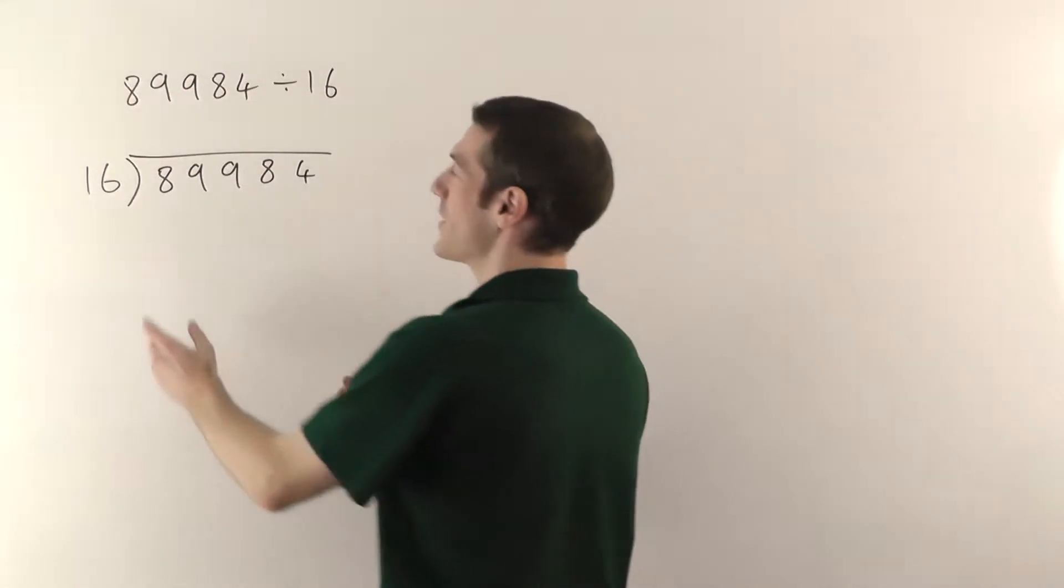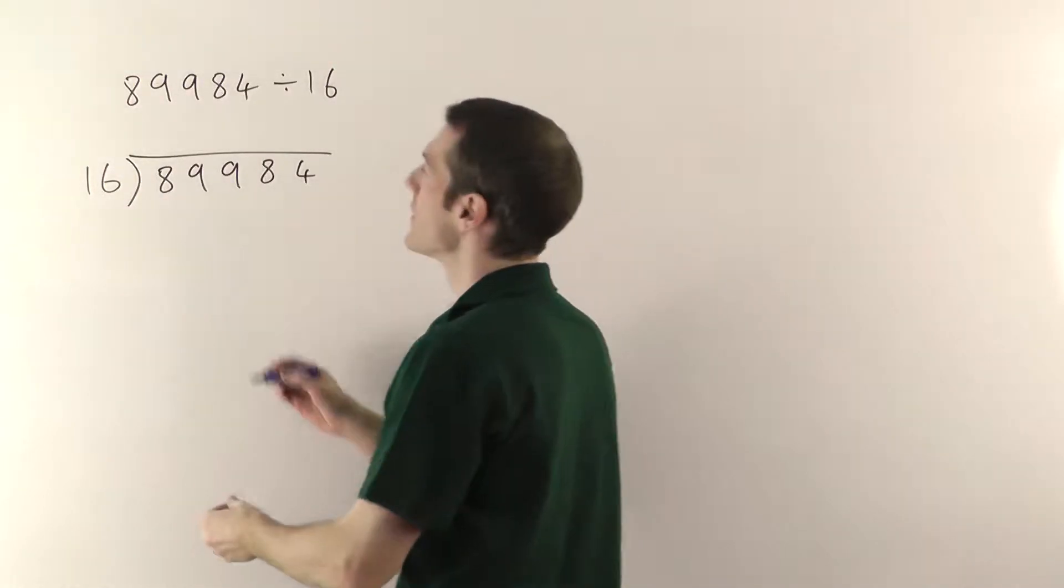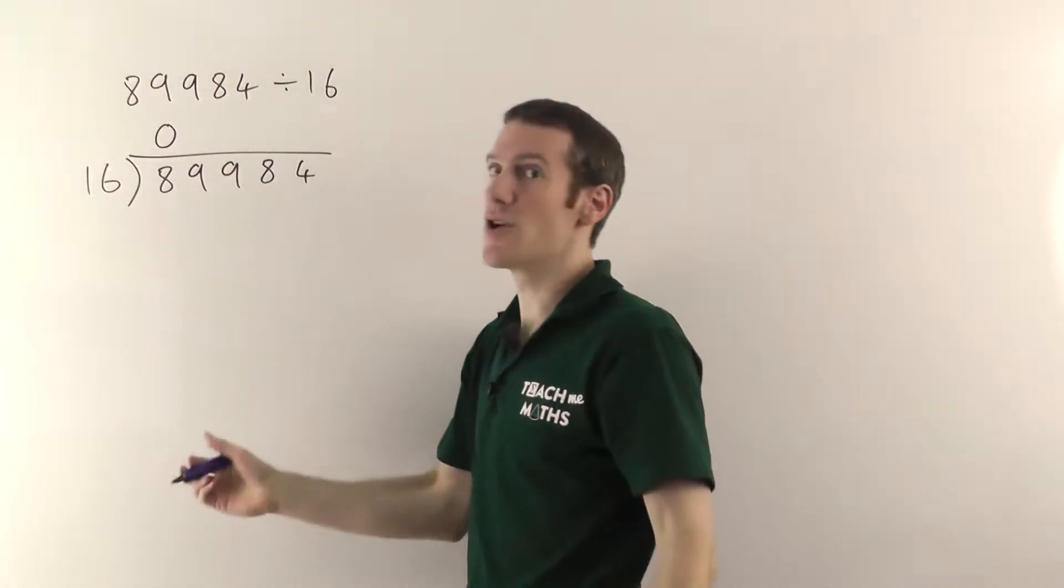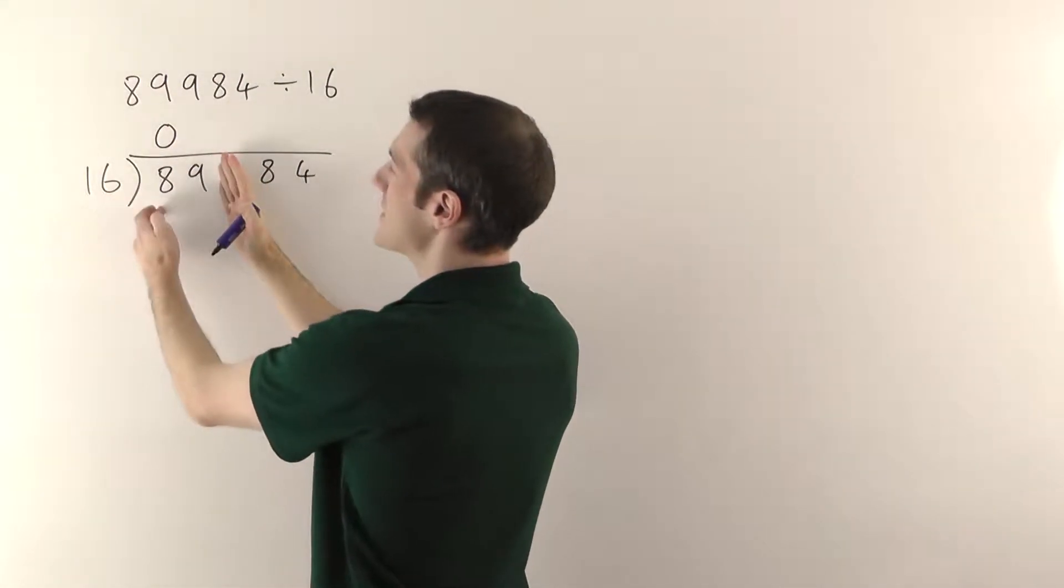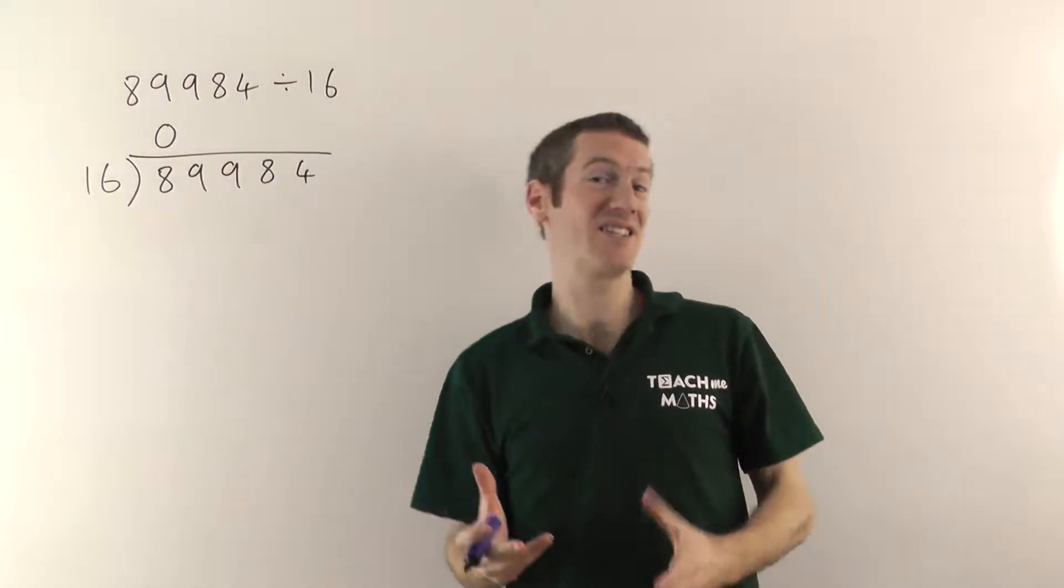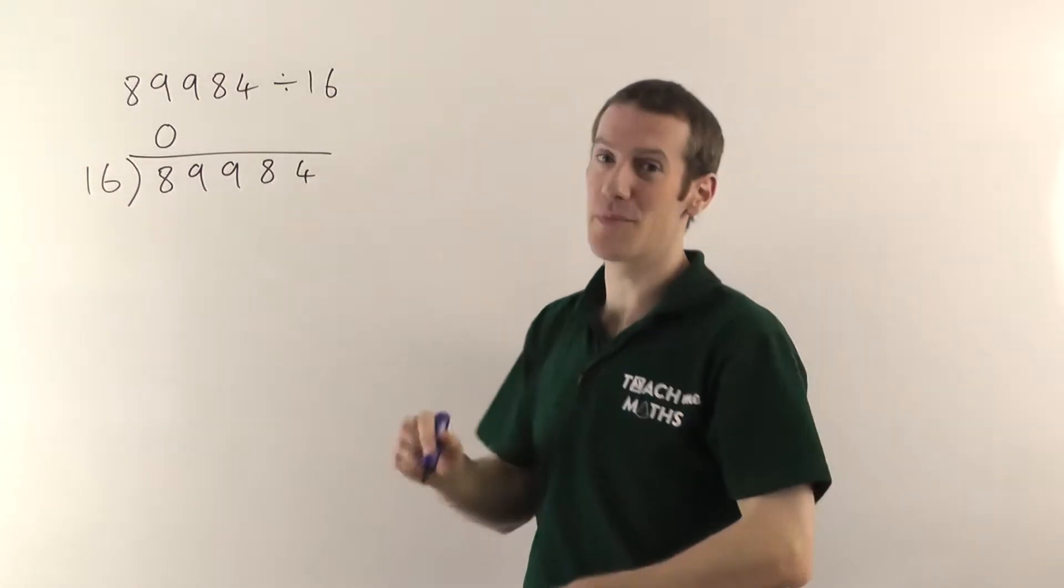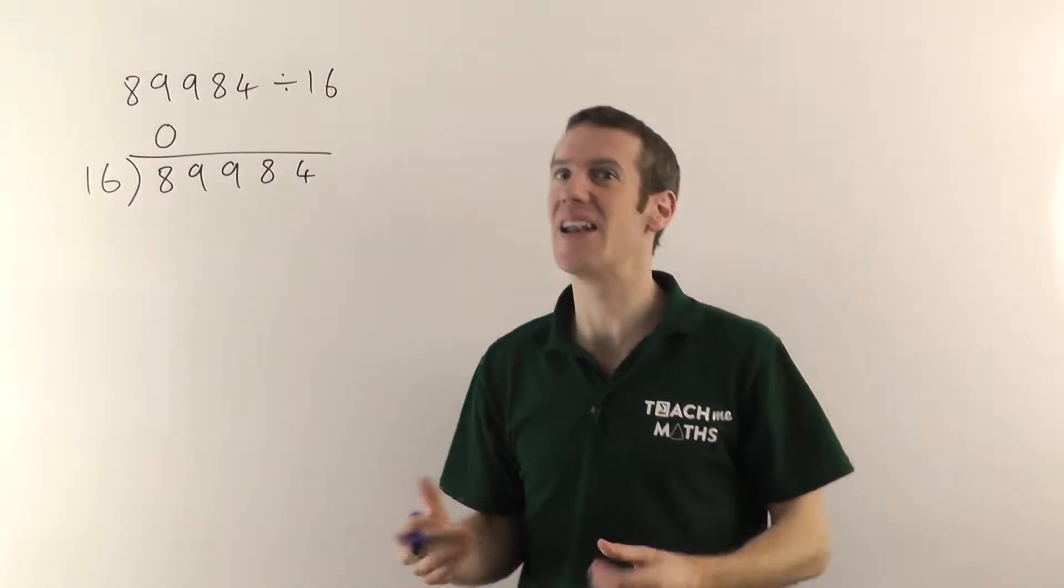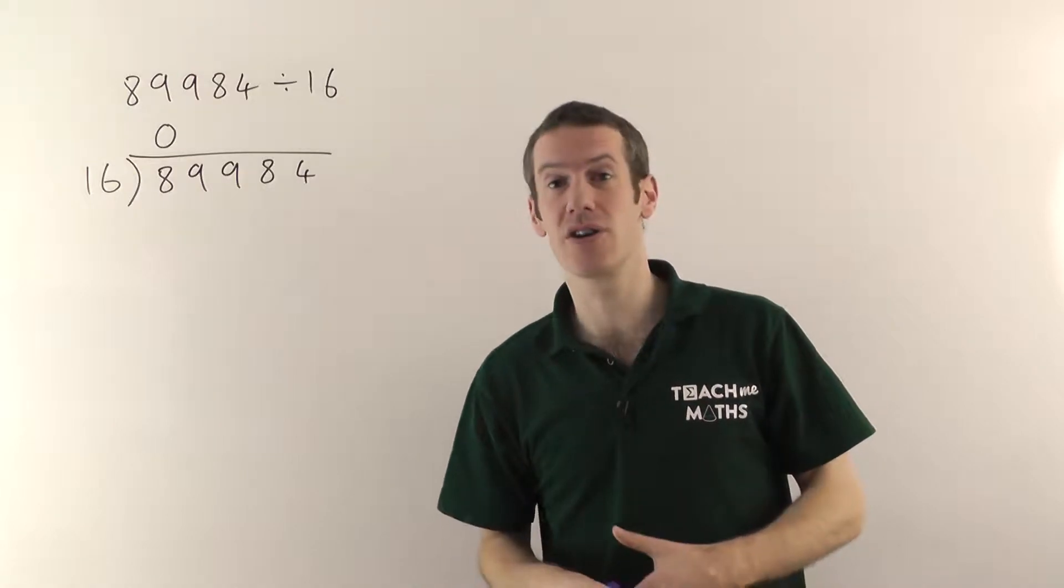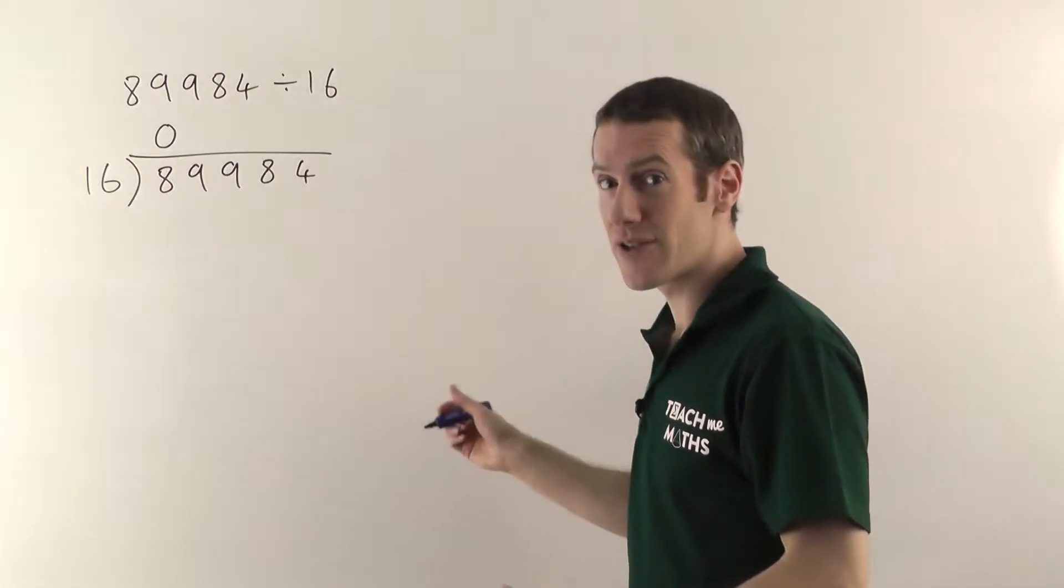So it starts the same way as short division. Sixteens into eight, that doesn't go, so you need to put a zero there. Then you're going to say how many sixteens going to 89. Now at this point we've got a bit of an issue. I don't know my sixteen times table. So what I recommend you do right at the start is write out the times table.